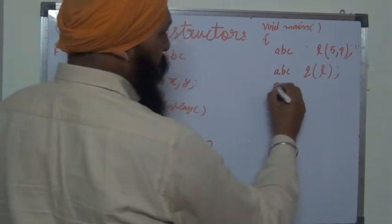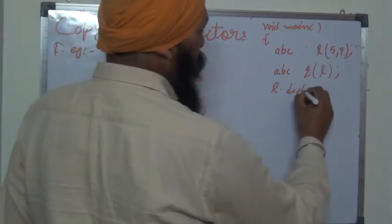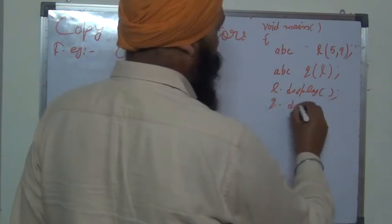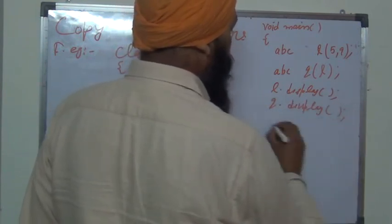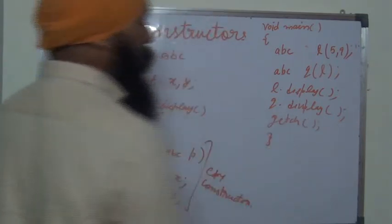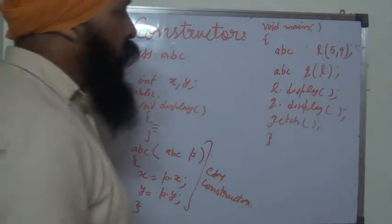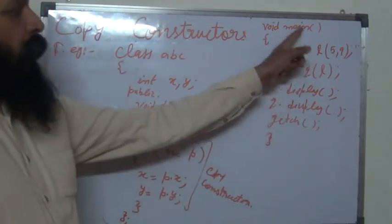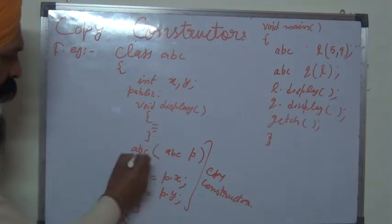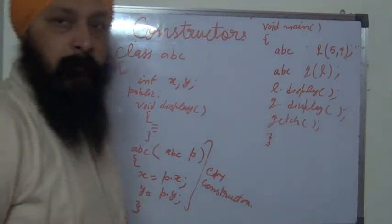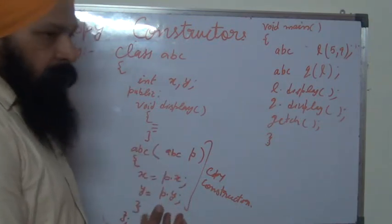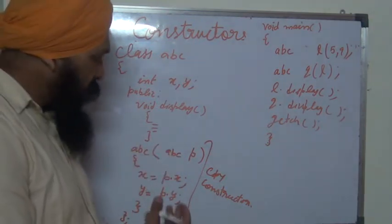You can display l.display and q.display and then close the program with getch. Keep in mind that you can have a default constructor, a parameterized constructor, and a copy constructor all in the same program.